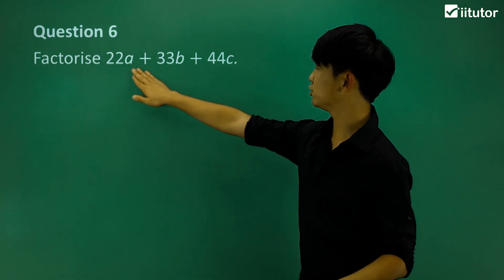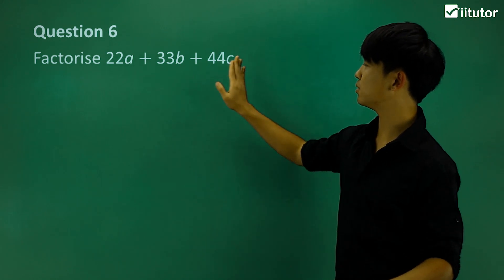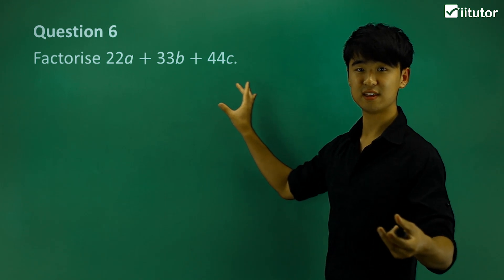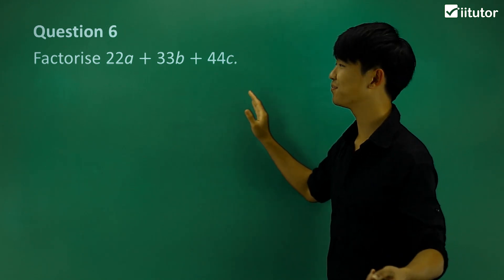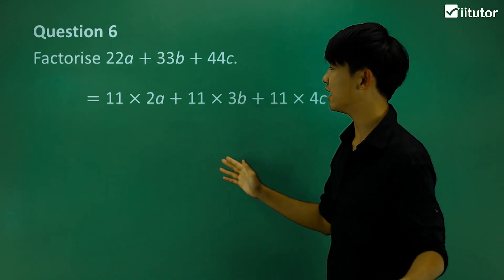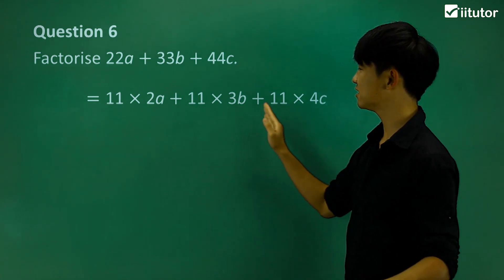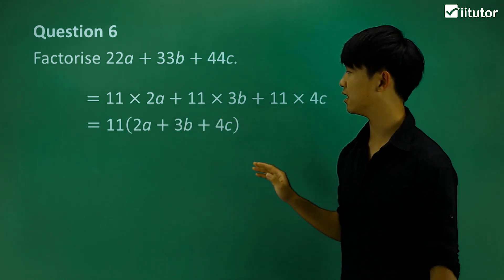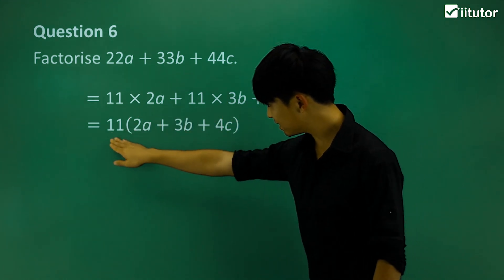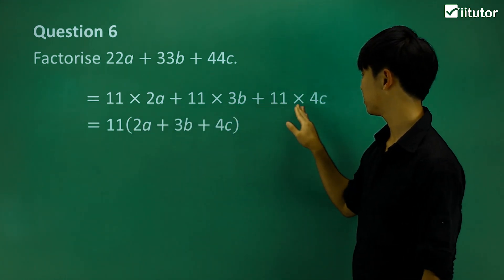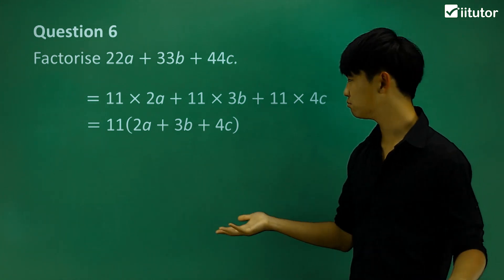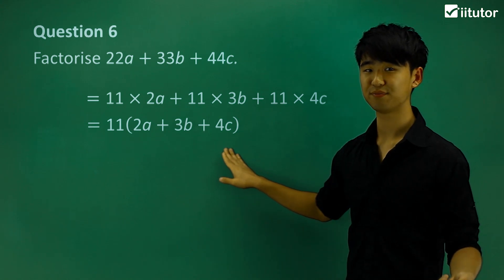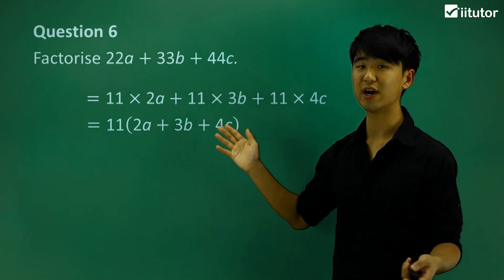Question 6: factorize 22A plus 33B plus 44C. Listing out the factors, they all contain 11s. So if I take the 11 out, what's left? 2A plus 3B plus 4C. So the answer is 11 bracket 2A plus 3B plus 4C bracket — we're just factorizing out 11.